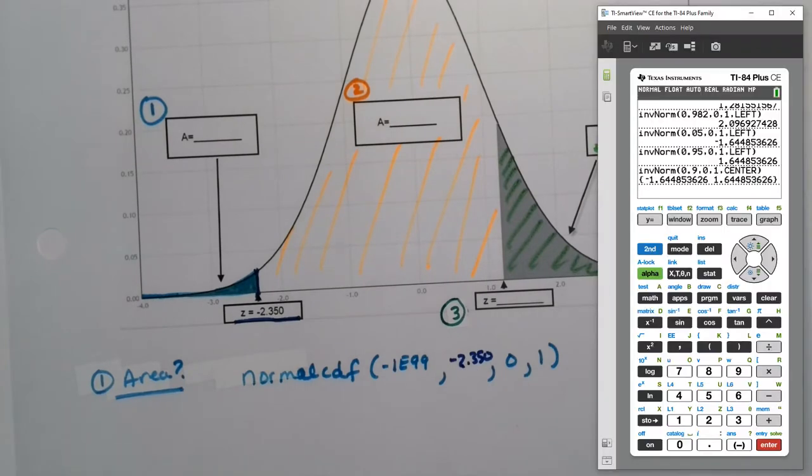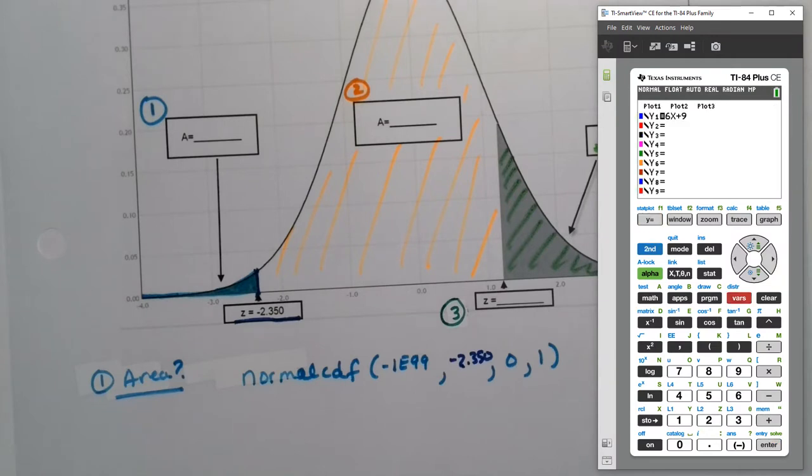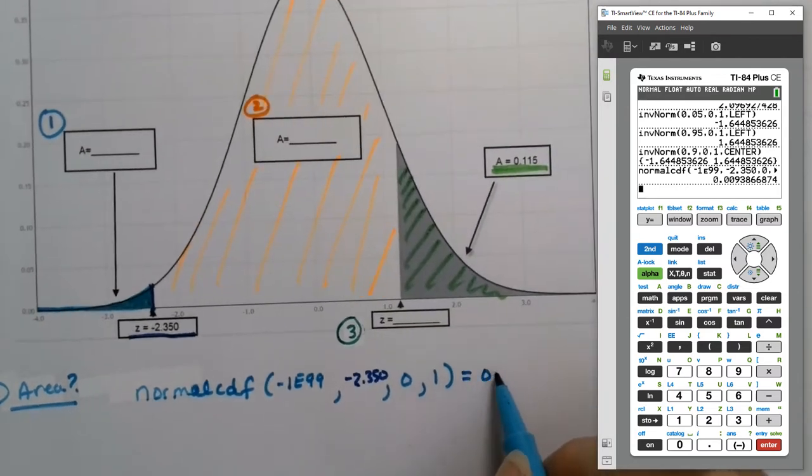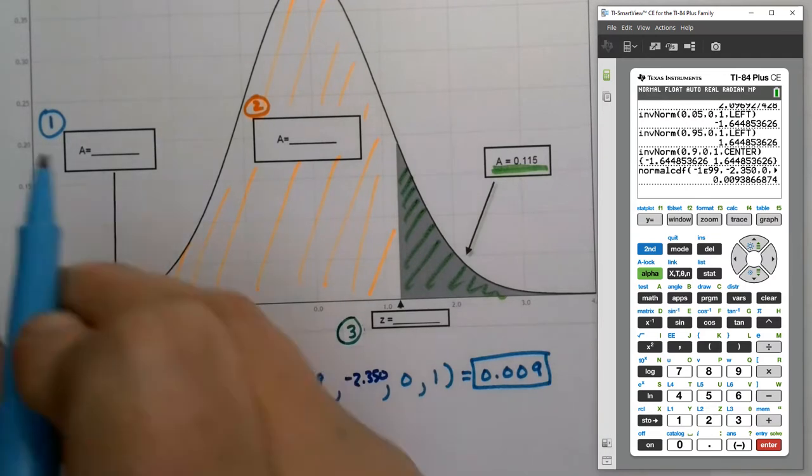Calculator-wise, second distribution, normalCDF. Don't forget to use the little negative sign in the parentheses: negative 2.350, zero and one. That E comes above second comma, it's the scientific notation E. So we get 0.009. It said to round to three decimal places, so that's this area.